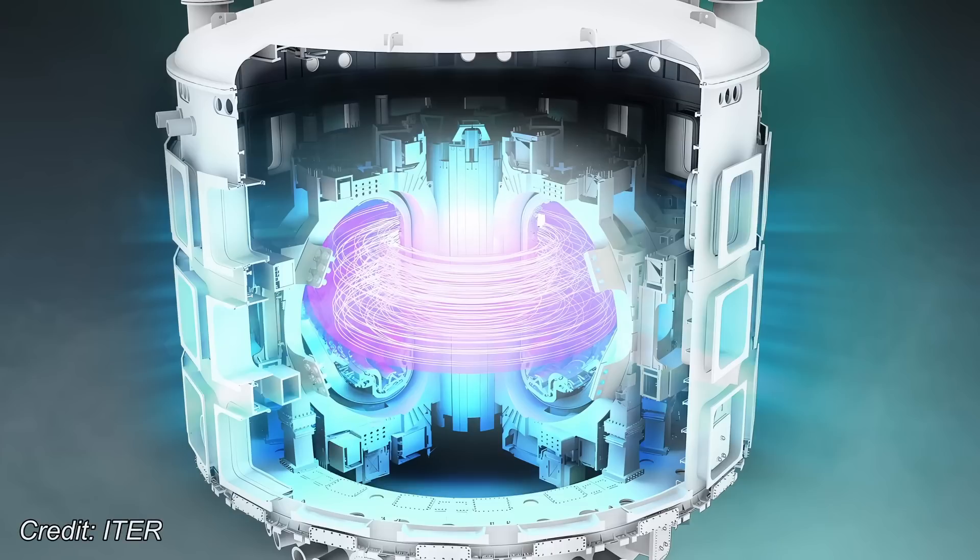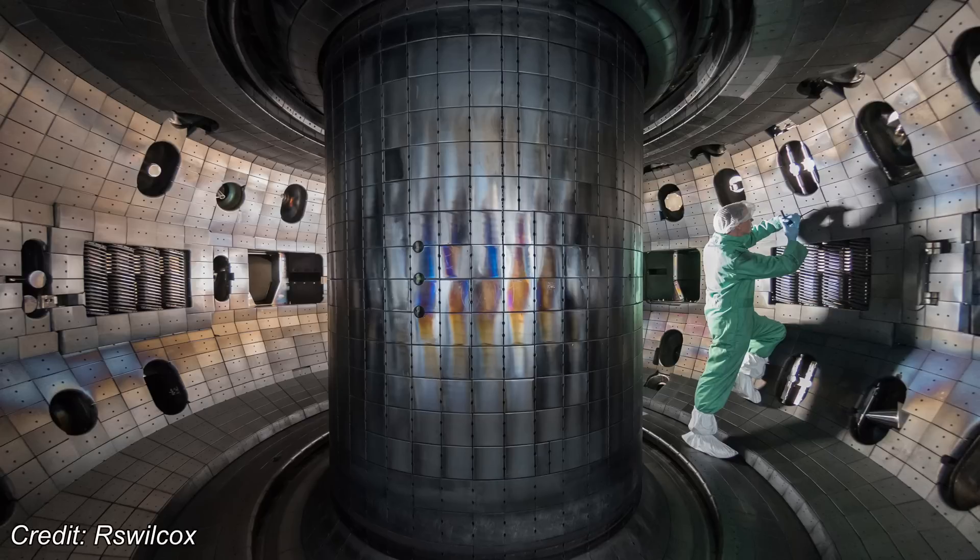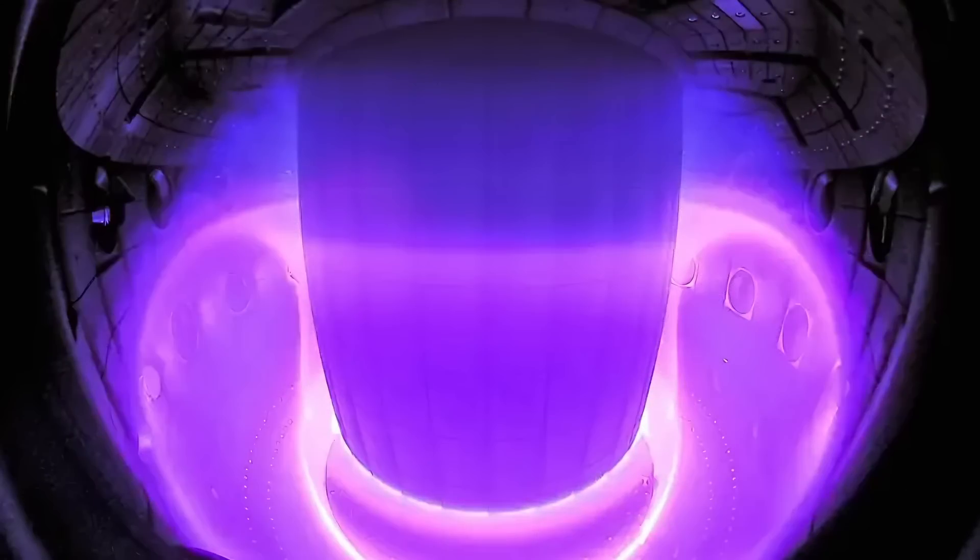The second method, exemplified by tokamak reactors, involves plasma confinement through electromagnetic fields. In tokamaks, hydrogen isotopes like deuterium and tritium are heated to create high-temperature plasma where fusion reactions release energy.